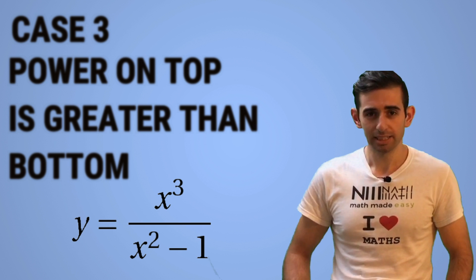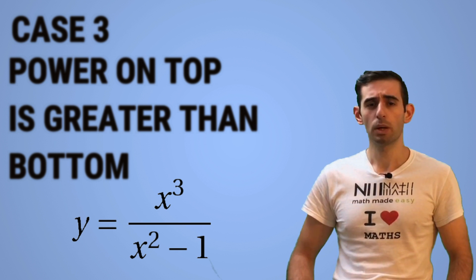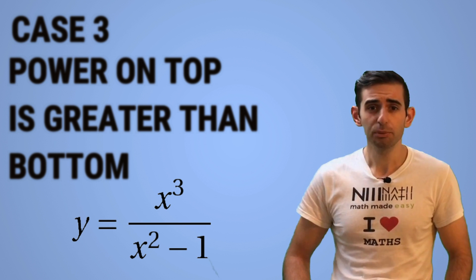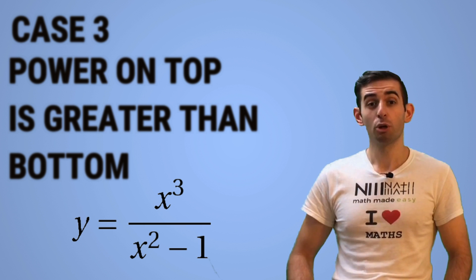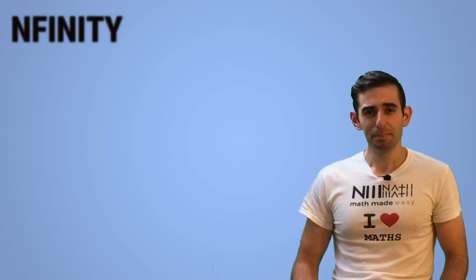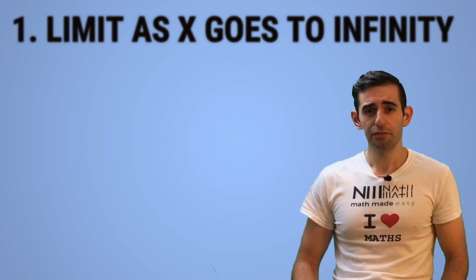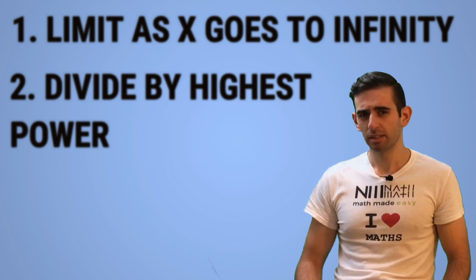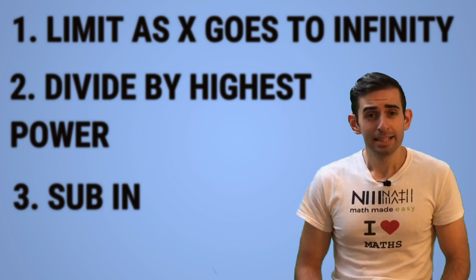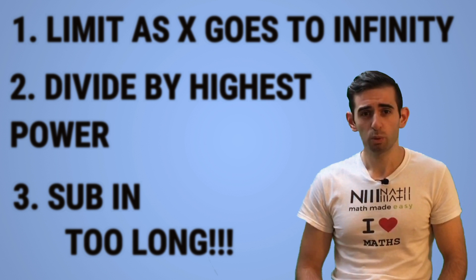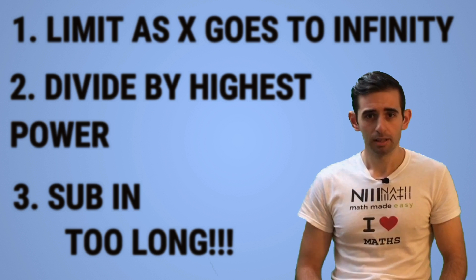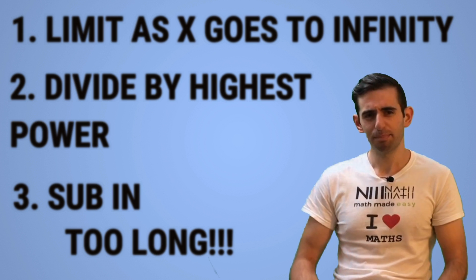So something like y equals x cubed over x squared minus one. Now in case three we get an oblique asymptote, so we will not be looking at that in today's video. To find horizontal asymptotes, you're taught to take the limit as x goes to infinity, divide through by the highest power, substitute the number in, and that whole process is too long. With this trick we'll be able to do it instantly, but in order to understand it you need to have some basic understanding of what the purpose of taking the limit at infinity is.